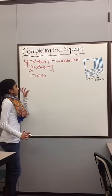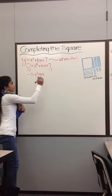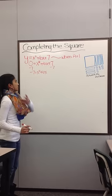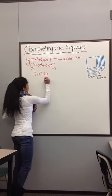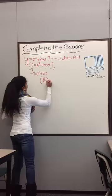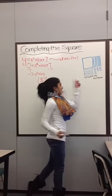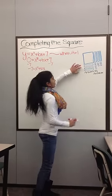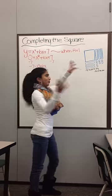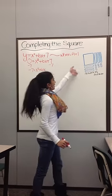To find what value adds on to x squared plus 6x to complete the square, you would divide 6 by 2 and square it, which is shown by the picture, because you would divide 6 into 2, so you can have equal parts on either side to complete the square.